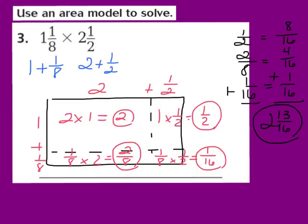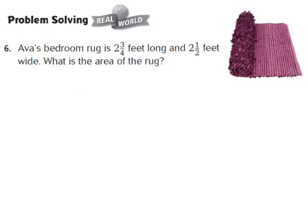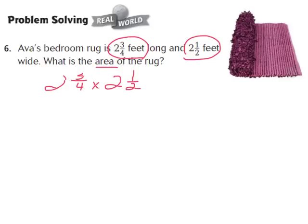We've now used the area model to solve 1 and 1/8 times 2 and 1/2. Now let's look at question number 6, a real-world problem. Ava's bedroom rug is 2 and 3/4 feet long and 2 and 1/2 feet wide. What is the area of the rug? To find area, we multiply length times width: 2 and 3/4 times 2 and 1/2. First, rewrite as: 2 plus 3/4, and 2 plus 1/2.